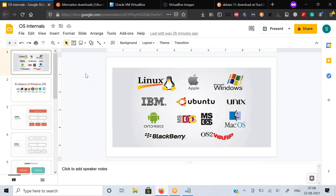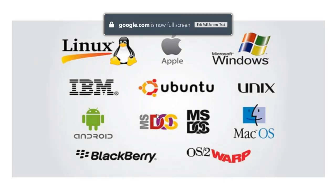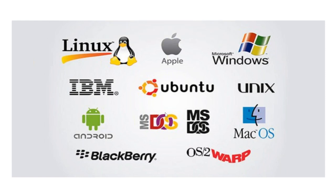Before going into that, let's look at what an operating system is. We've been hearing about operating systems and many different kinds. Predominantly, you've been using Windows on your desktops and office workstations - Windows 7, Windows 10, or Windows 11. There are also Linux-based operating systems, Apple Mac OS, and Android on mobile phones.